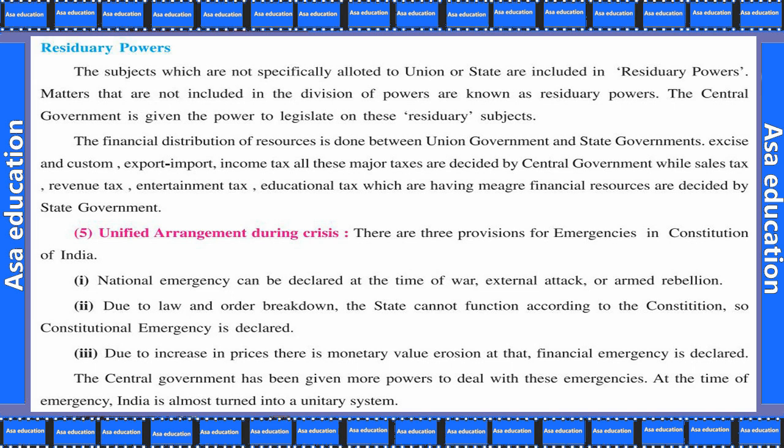Doosra hai — due to law and order breakdown, the state cannot function according to the constitution, so constitutional emergency is declared. Agar by chance law and order khatm ho gaya hai, state sahi se function nahi kar pa raha hai constitution ke according, to constitutional emergency declare ki jayegi.